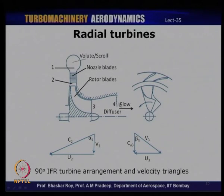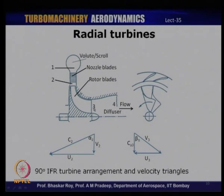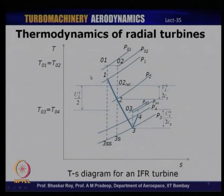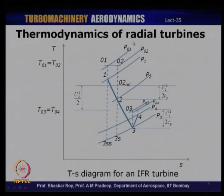There should be a continuous drop in static pressure between stations 1 to 2 and 2 to 3, as flow accelerates through the nozzle and rotor. In the diffuser, there is a rise in static pressure between stations 3 and 4. In the nozzle, there is no change in stagnation enthalpy — T01 equals T02. Similarly, in the diffuser T03 equals T04. P01 is the stagnation pressure at nozzle entry; there is a small total pressure loss in the nozzle due to friction.